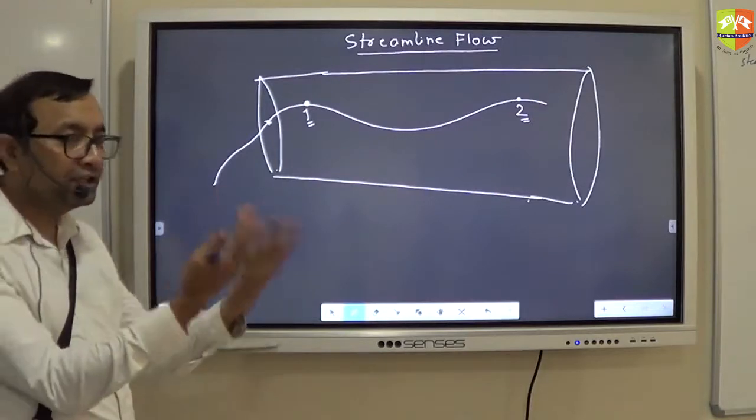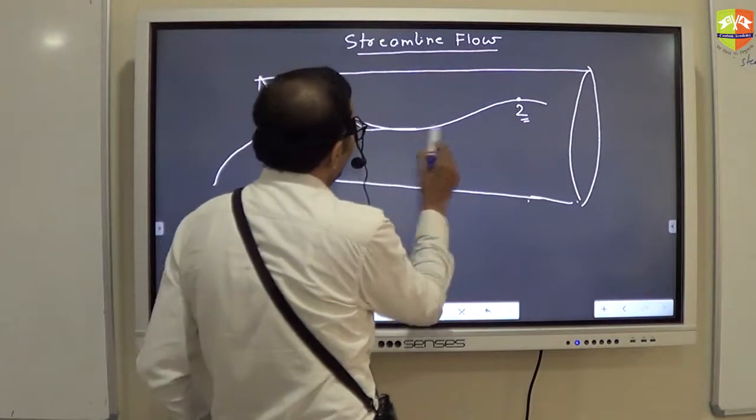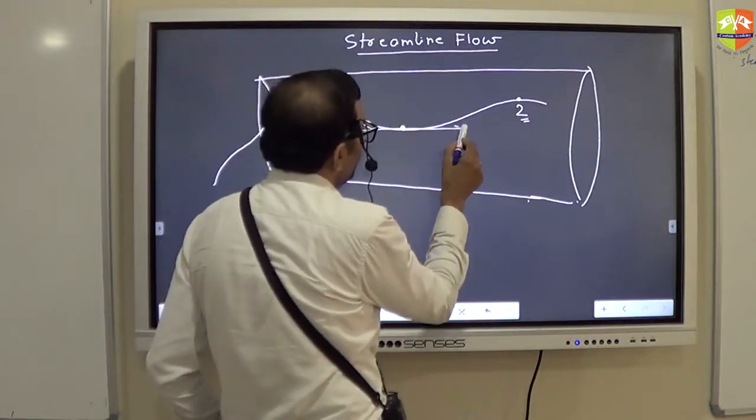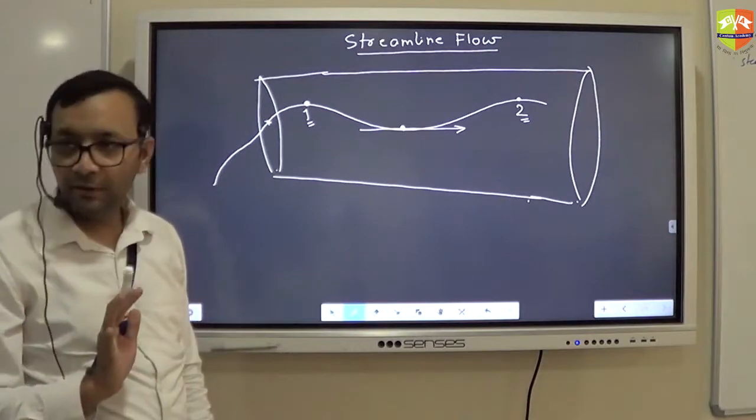So if I know the streamline, which streamline it is, I can just draw the tangent and I can tell you, at this point, the direction of flow is this. Simple? Alright?